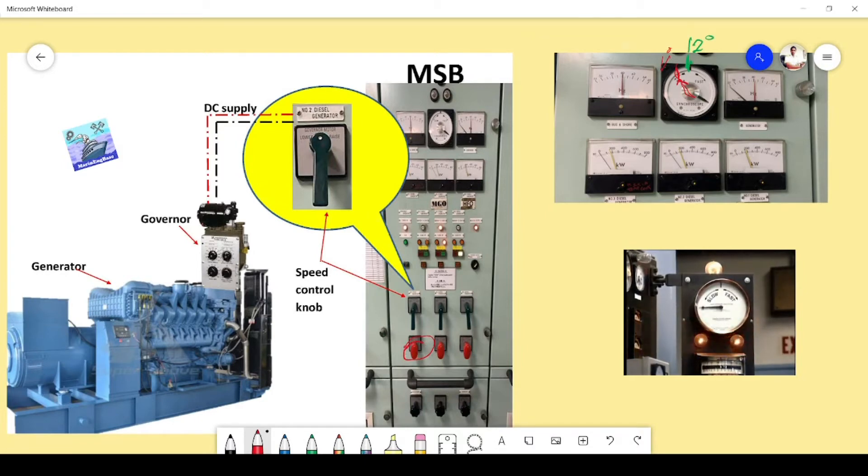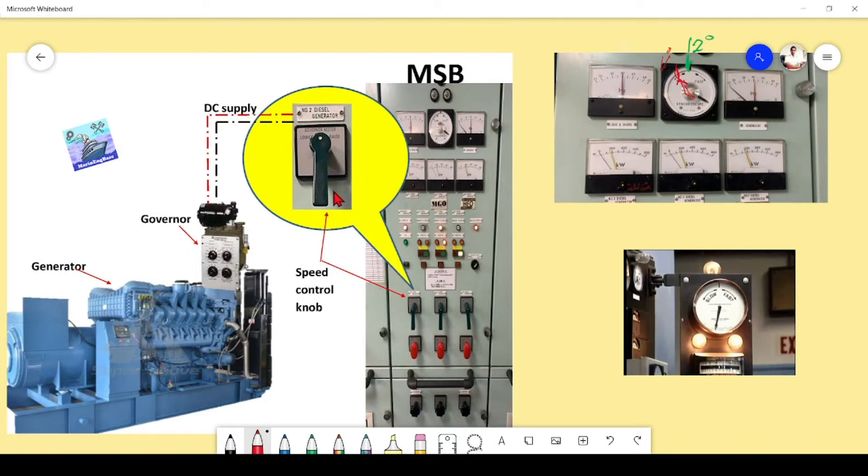The generator will be connected to the bus bar without any difficulty or abnormality. Now I will discuss what these switches are. These three switches are the speed control levers. By rotating these clockwise or anti-clockwise, we can lower or increase the speed of the generator. These red button switches are to close the breaker for generator number one, number two, and number three.